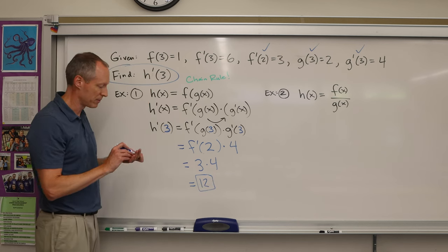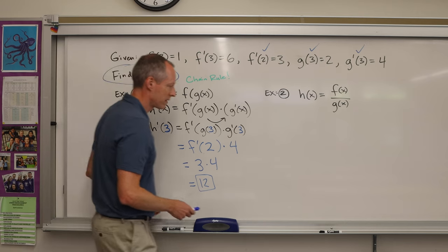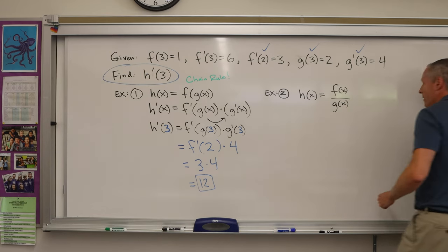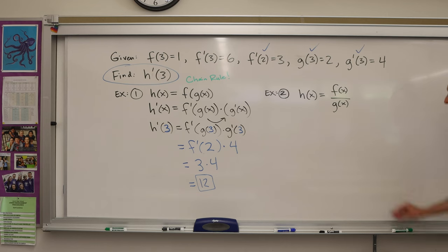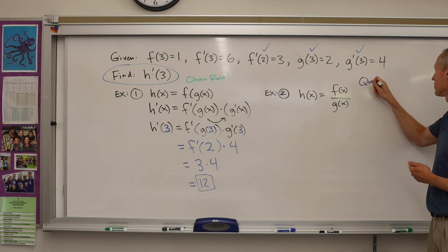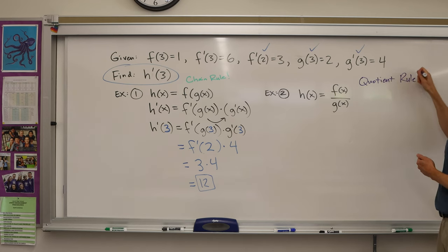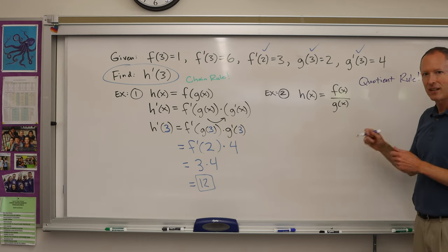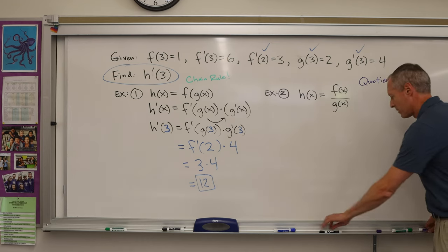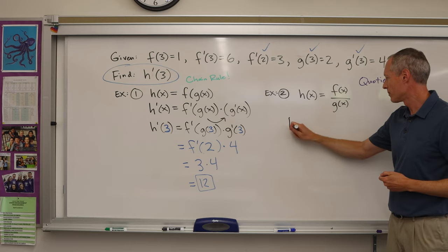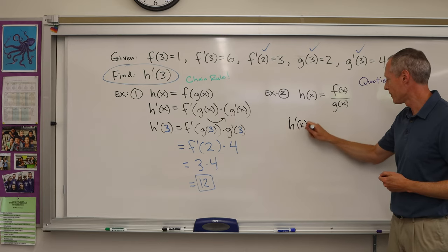So there's an example of the chain rule. Now let's go to this next one. Hopefully obviously, this one - two things are being divided, so it's the quotient rule. So maybe we should write that down. We're doing the quotient rule. One more time with the memory device: low d high less high d low over the denominator squared below.